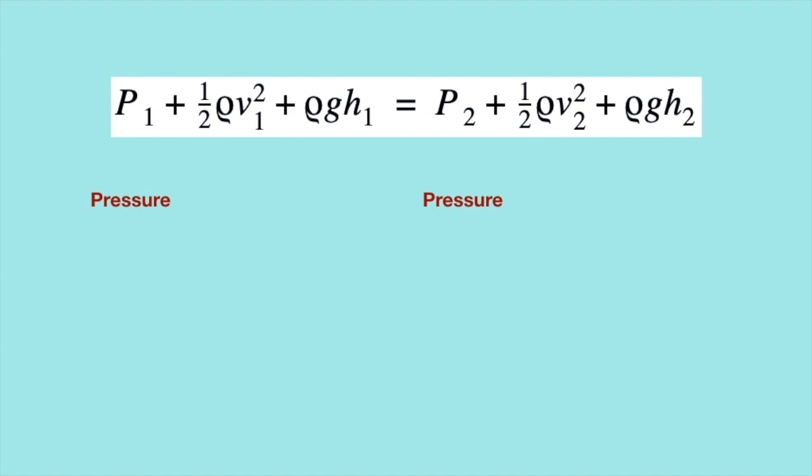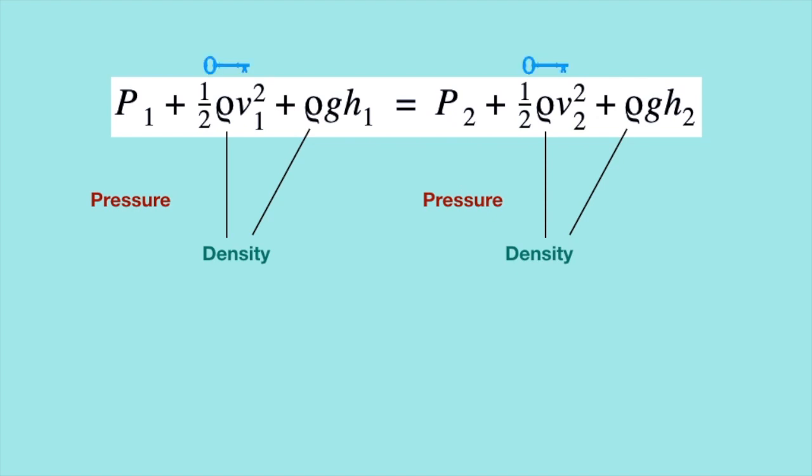Now let's go through the symbols in the equation. The big P tells us about the pressure. The symbol rho is the density of the liquid or gas — in our pipe example, it is the density of the air inside the pipeline. Rho stays fixed in our example, as the density of the air does not change in this pipe, so rho stays the same on both sides of the equation.